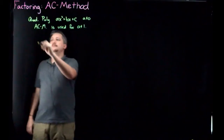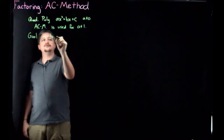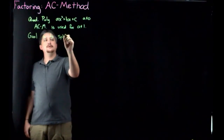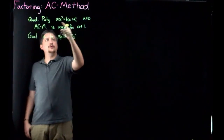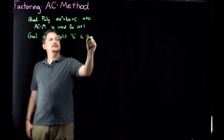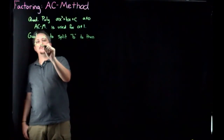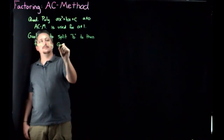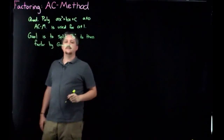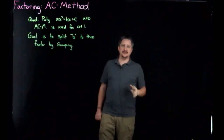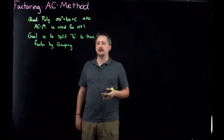Our goal is to split the B term in this form, and then factor by grouping. That's really the two-step core of the AC method. Let's look at a concrete example and go through how that works.